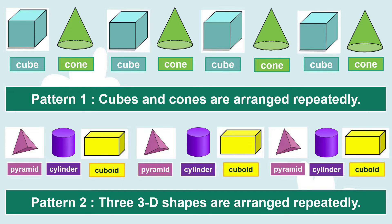Now look at pattern 2. In this pattern, 3 three-dimensional shapes are arranged repeatedly: pyramid, cylinder, cuboid, pyramid, cylinder, cuboid, pyramid, cylinder, cuboid.